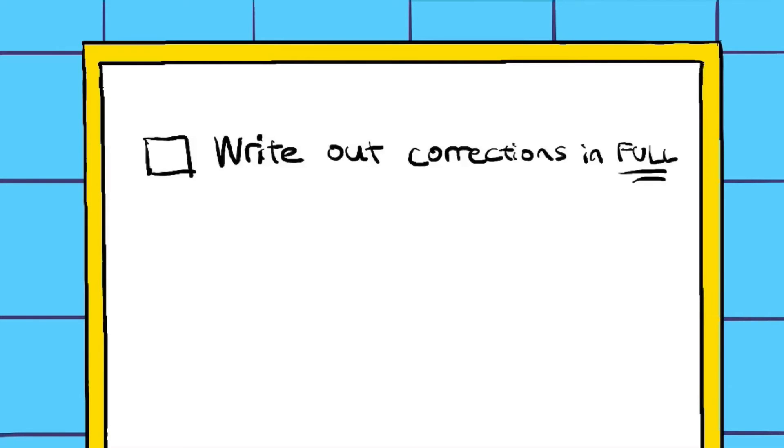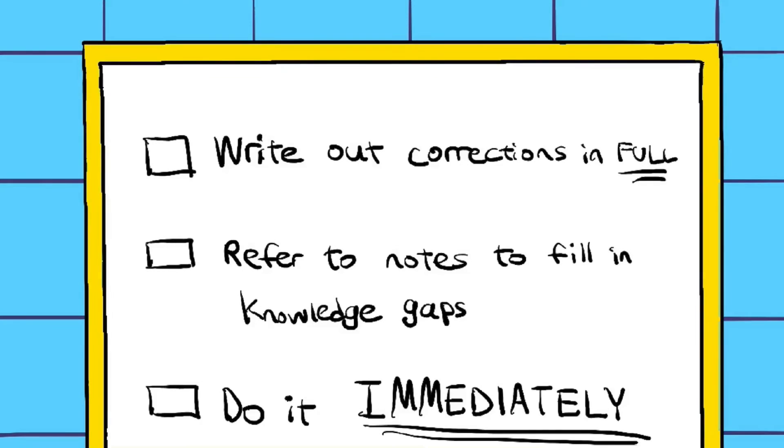For me, after self-marking my own paper, I would write out the parts which I missed out in my answers in full as part of my corrections. And where necessary, I also went back to specific parts of my notes to fill in my knowledge gaps. I would like to highlight that doing this immediately or with urgency is very crucial because if you don't, it may not produce the desired levels of effectiveness and could potentially become counterproductive instead.